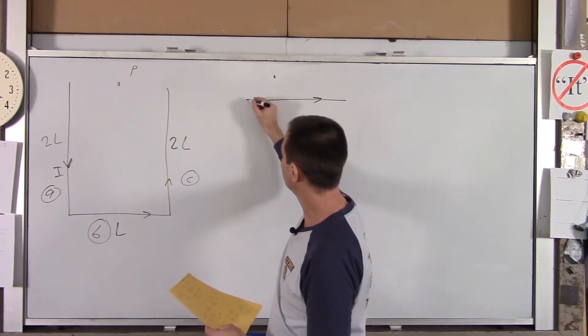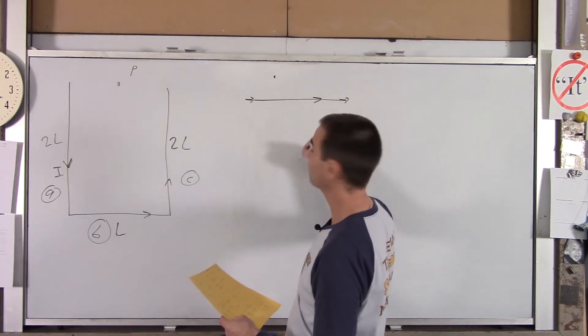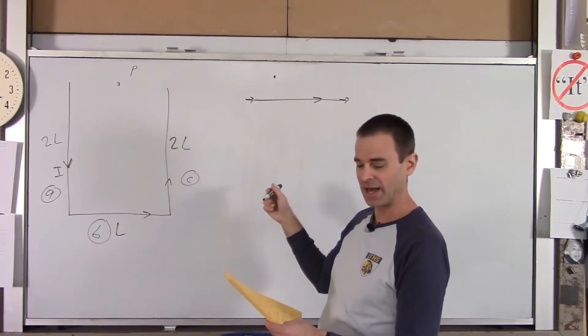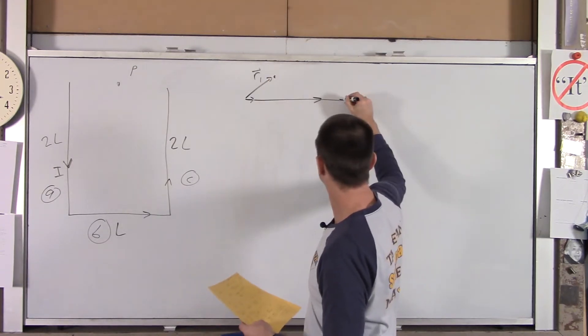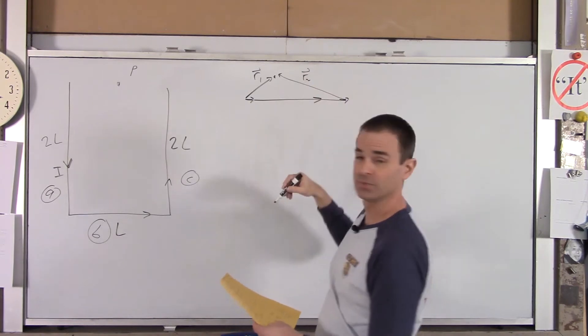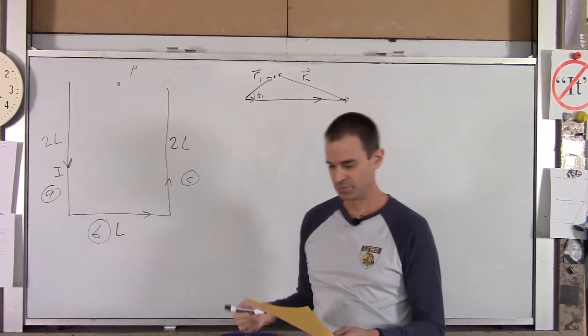You look at the very beginning current, the current at the very beginning of the wire, and the current at the very end of the wire. And from each of those currents, you draw radii to the point of interest. So we'll call that R1, and we'll call that R2. This would be theta 1. Now, you have to be real careful.